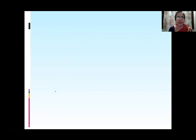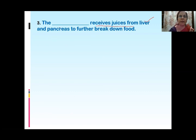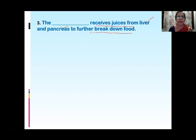Next question: Dash receives juices from liver and pancreas to further break down food. In which part of the digestive system are juices from the liver and pancreas released for the breakdown of food? It is the small intestine.